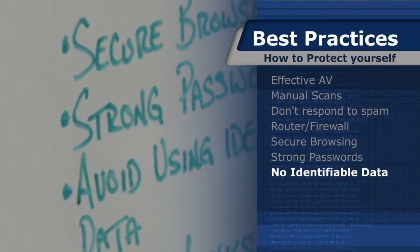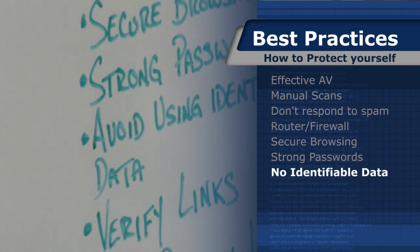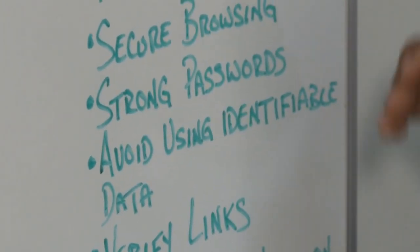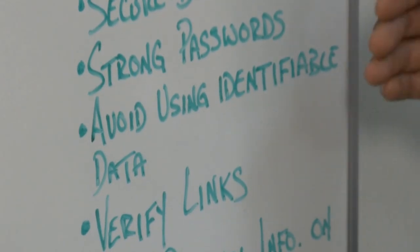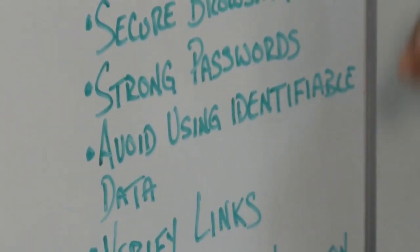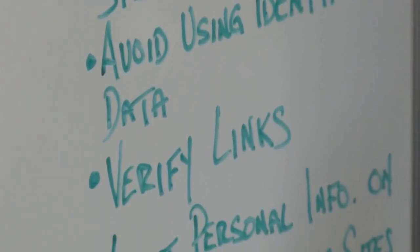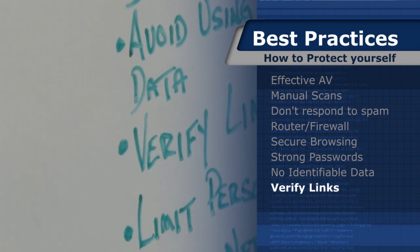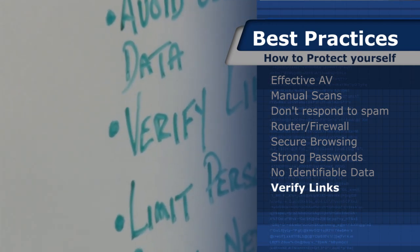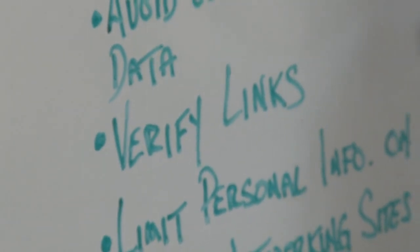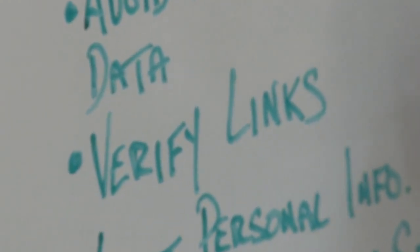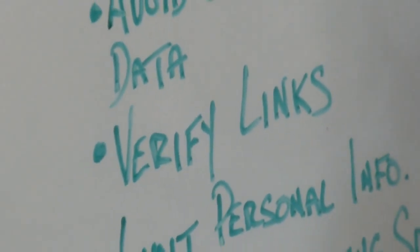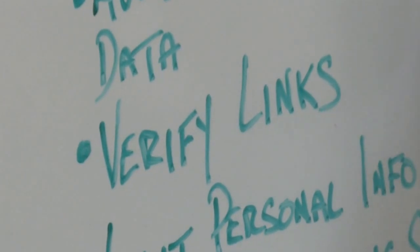Avoid using things such as children's names, your name, pets' names, birthdays, and other easily guessed personally identifiable information where someone that knows you may be able to guess that password. When receiving links via instant messaging, email, or even a website, confirm that link. If someone tells you to go to a particular link and there is no reason behind it, confirm the purpose of the person sending it. In some cases you may find they never sent you the link and their machine may have been infected and is automatically sending you links to malicious sites.